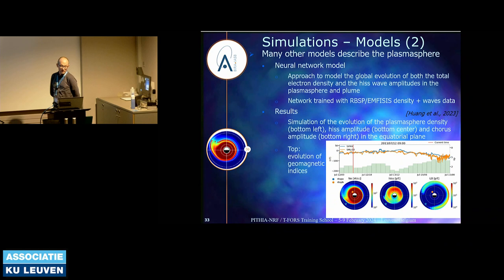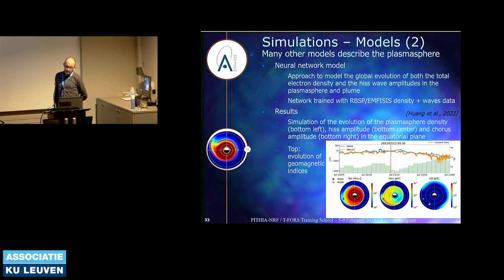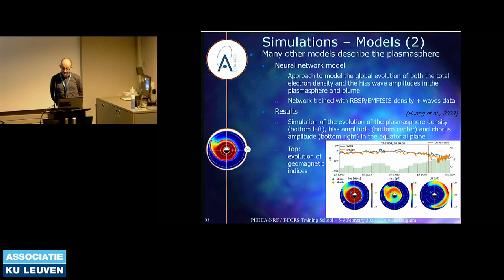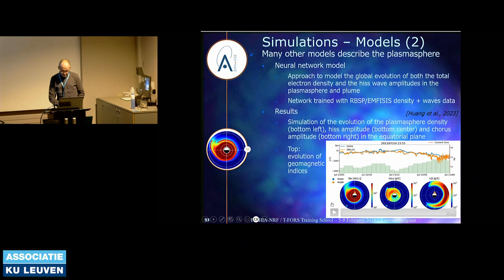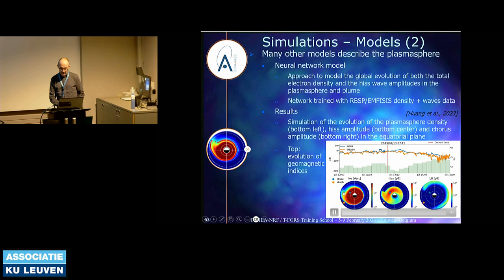Another model, very recent, is a neural network model which tries to approach the global evolution of the total electron density and the ELF waves amplitude — both are related — in the plasmasphere and in plumes in particular. They trained their neural network model with density and wave data from the EMFISIS instrument on both RBSP satellites. You can see the evolution of the plasmasphere density in the equatorial plane, the formation of a plasmospheric plume rotating and later expanding, and ELF waves present in this plume, which is a quite interesting result.